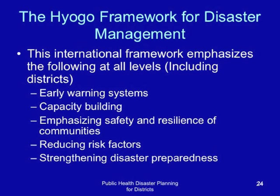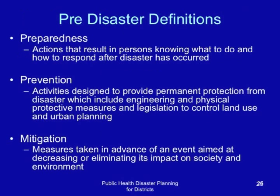Pre-disaster definitions include preparedness, which implies actions that result in persons knowing what to do and how to respond after a disaster has occurred. Prevention means activities designed to provide permanent protection from disaster, which include engineering and physical protective measures as well as legislation to control land use and urban planning. Mitigation refers to measures taken in advance of an event aimed at decreasing or eliminating its impact on society and the environment.